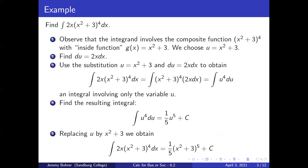Fourth, find the resulting integral. The integral of u to the fourth du equals one-fifth u to the fifth plus c. And we replace u by x squared plus three to get the integral of 2x times x squared plus three to the fourth dx equals one-fifth times x squared plus three to the fifth plus c.